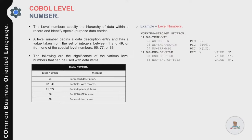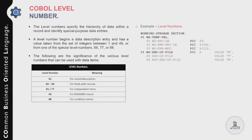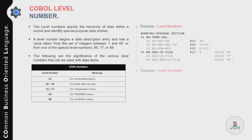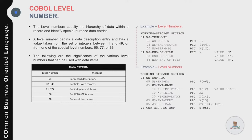Level 66 is used for the RENAMES clause and level 88 is used for condition names. Looking at a working storage section example, there are two group variables defined at level 01. The first is WS-TEMPORARY-VARIABLES, and within that record description, individual elements are defined at level 05, such as a numeric record length variable defined as PIC 99.